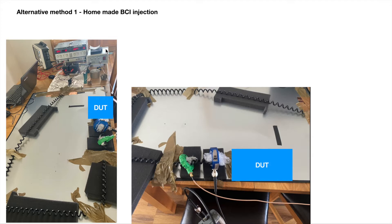As mentioned, we did try another two methods before we applied the capacitive injection method. The first method we tried is a homemade bulk current injection method, as shown here. I do apologize for the messy setup here.